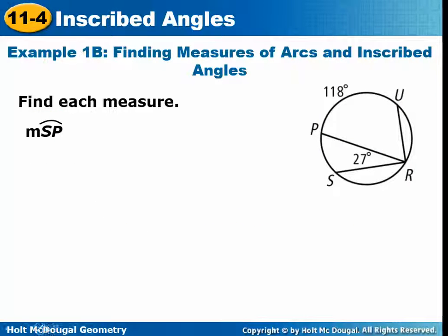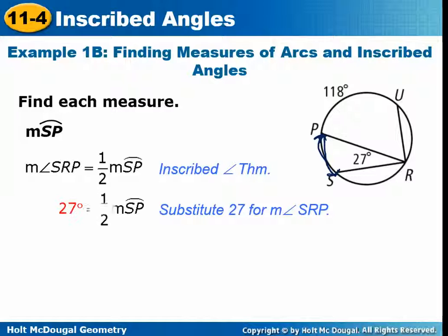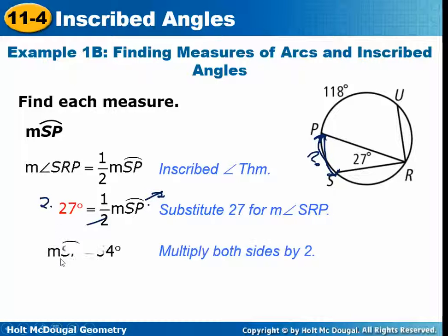The next one asks for the measure of arc SP — the arc from here to here. They're giving us that the inscribed angle is 27 degrees. So you write 27 equals half of the measure of arc SP. To solve, multiply both sides by 2 to cancel the fraction. Two times 27 is 54, so the measure of arc SP is 54 degrees.